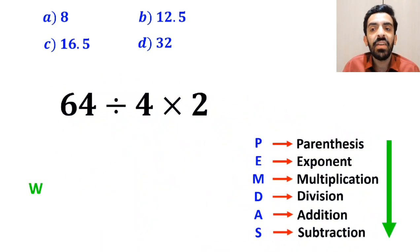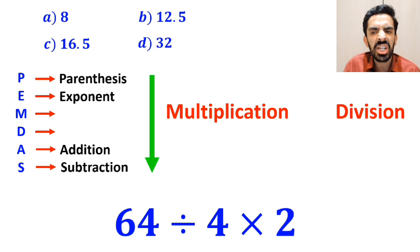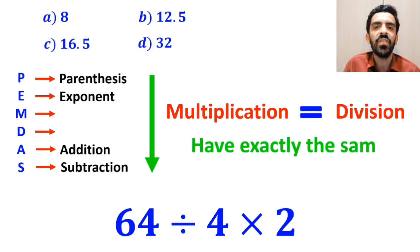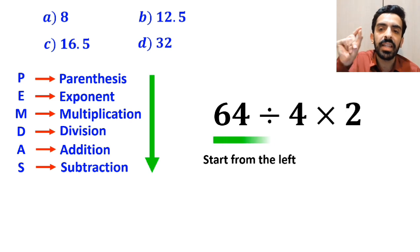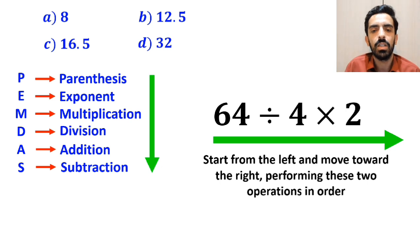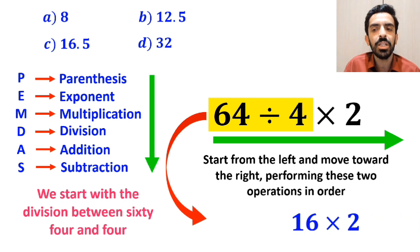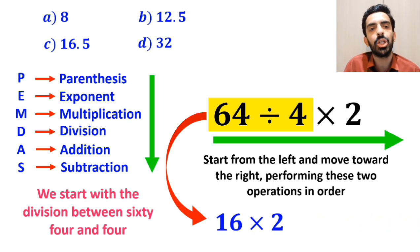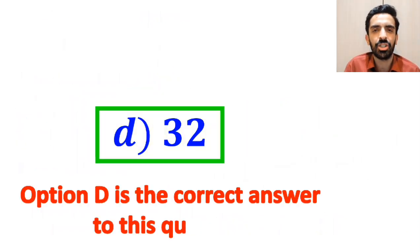In the final step, we handle the division and multiplication. It's very important to note that according to the PEMDAS rule, multiplication and division have exactly the same level of priority. The best approach is to start from the left and move toward the right, performing these two operations in order. So we start with the division between 64 and 4, which simplifies to 16 × 2, giving us the answer 32. Therefore, option D is the correct answer.